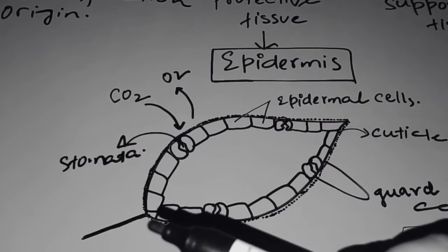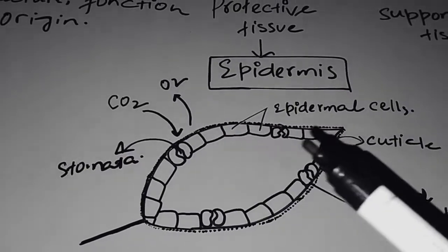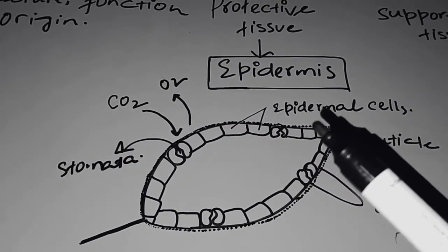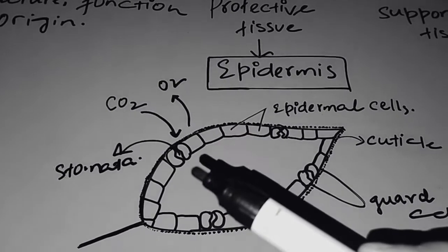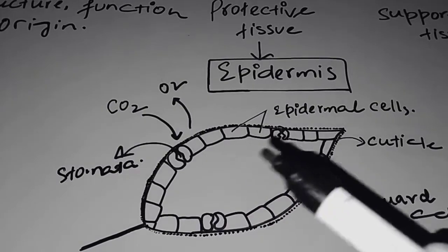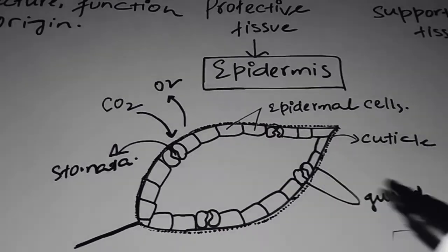Because there are some other cells that we call guard cells. But remember, epidermis is present throughout the plant body. You can see here the leaf outer layer is made up of epidermis or epidermal cells. Here are rectangular shaped cells which have been made up of guard cells. These are bean-shaped cells we will say, guard cells.